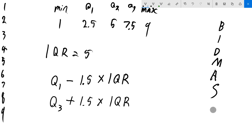BIDMAS, brackets, indices, division, multiplication, addition, subtraction. So in this case multiplication first, 1.5 times IQR. If you don't have a calculator and you want to calculate this,